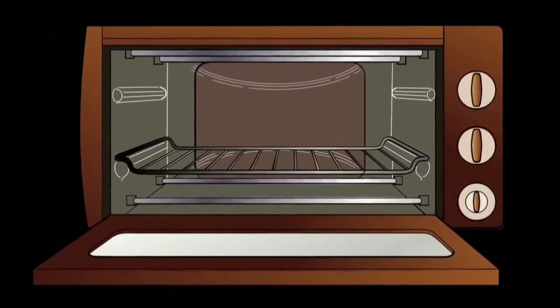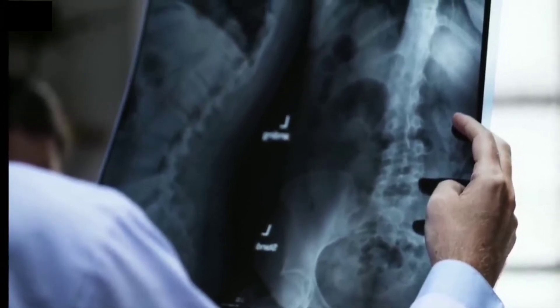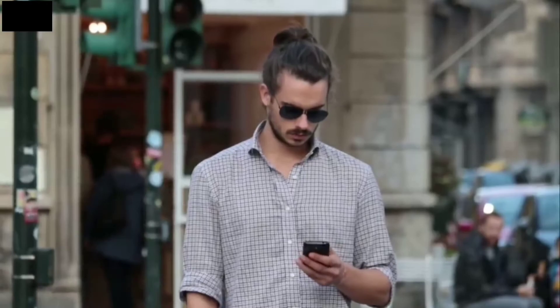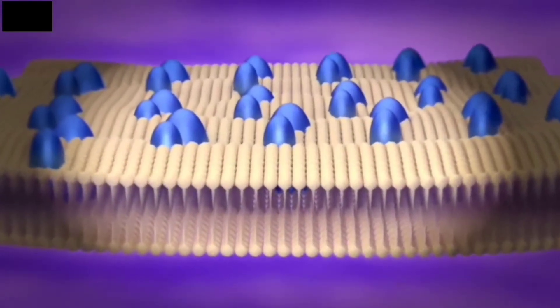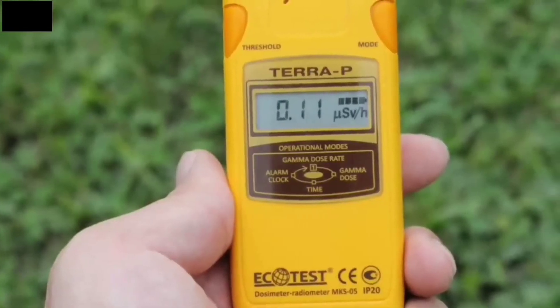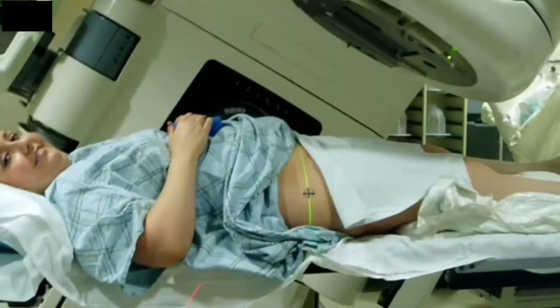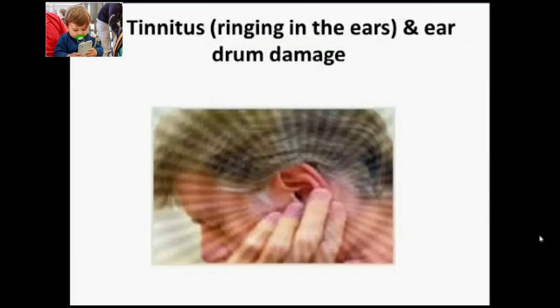Women who use mobile phones when pregnant are more likely to give birth to children with behavioral problems, according to authoritative research. Individuals who are concerned about radio frequency exposure can limit their exposure by using an earpiece and limiting cell phone use. Scientists have reported adverse effects of using mobile phones including changes in human activity, reaction times, and sleep.